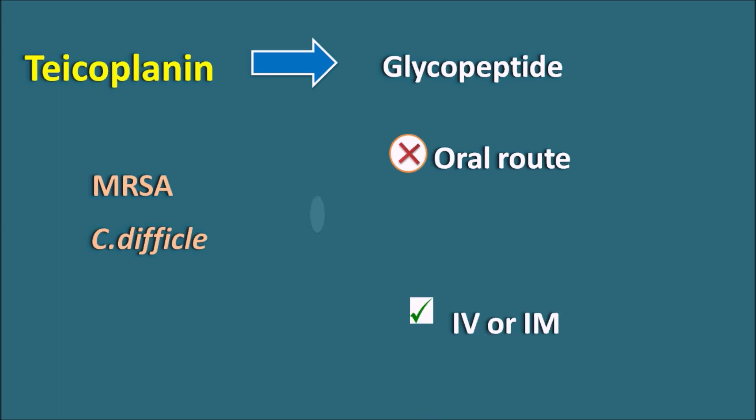Teicoplanin is not suitable by the oral route, only by IV or intramuscular route. We have seen that vancomycin can be given orally, but teicoplanin cannot. Whether a peptide drug is suitable by oral route depends on the size of the peptide as well as the modification of the peptide structure.